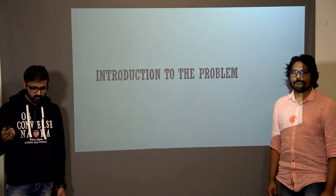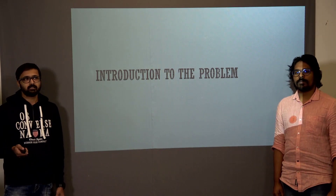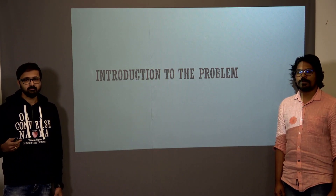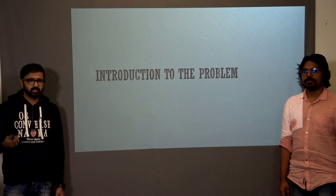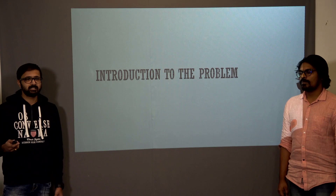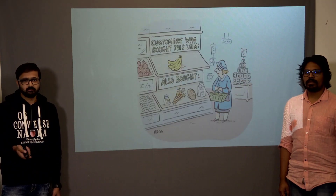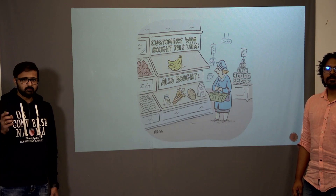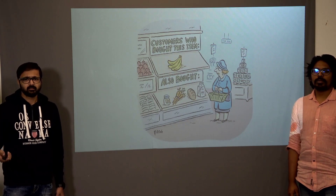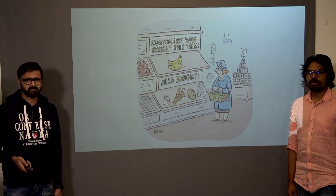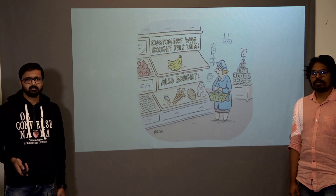Instacart is a company that provides same-day grocery delivery service to its users. It gathered a lot of data over time related to user transactions, and it published the data to the Kaggle community to see what kind of insights could be brought out from the data. They anonymized the data first. One application of this analysis can be the suggestion of items — when a user adds a few items to their cart, the application can suggest what else they might buy.